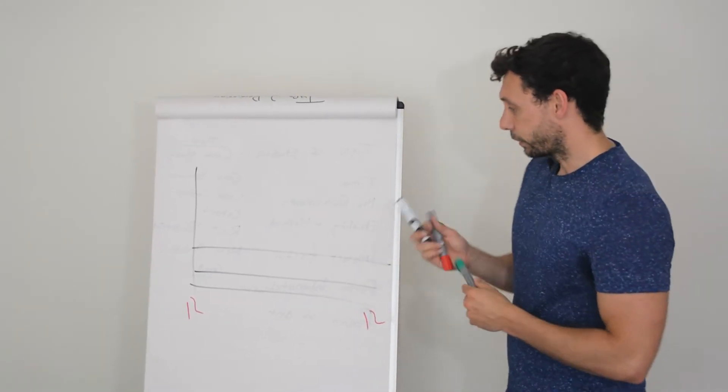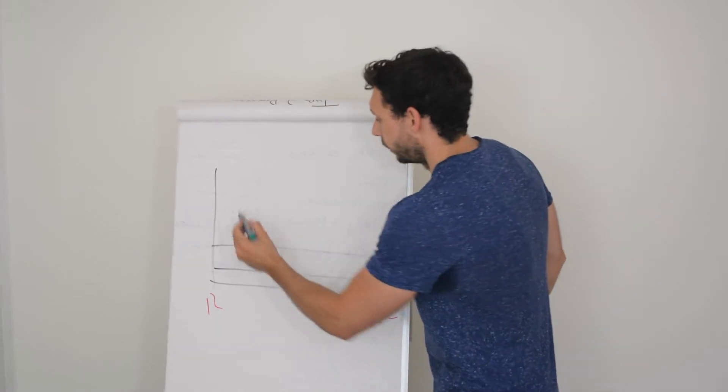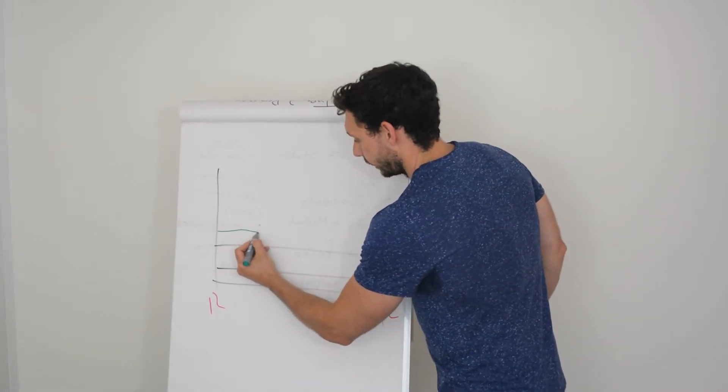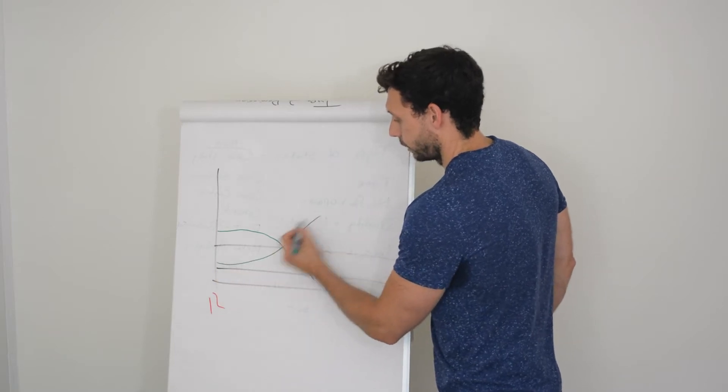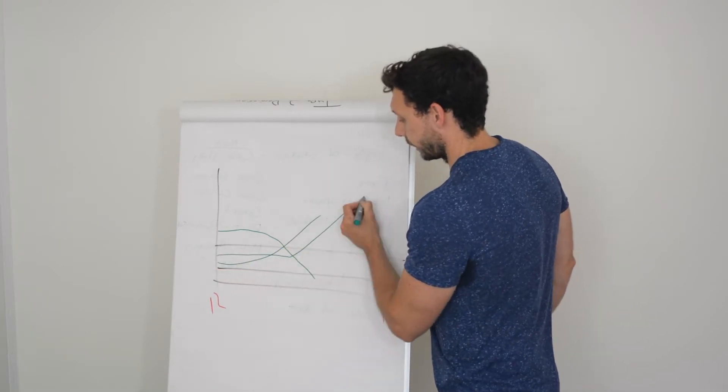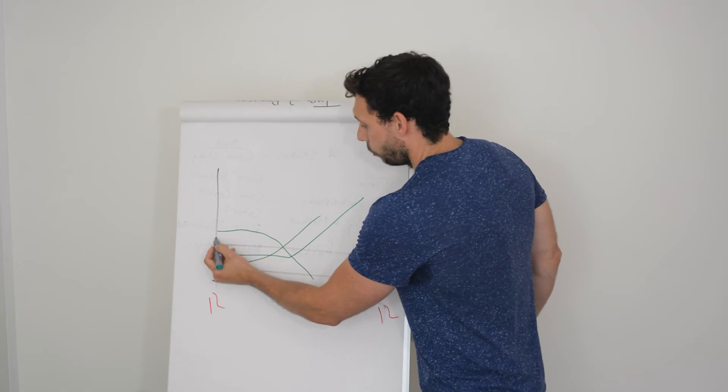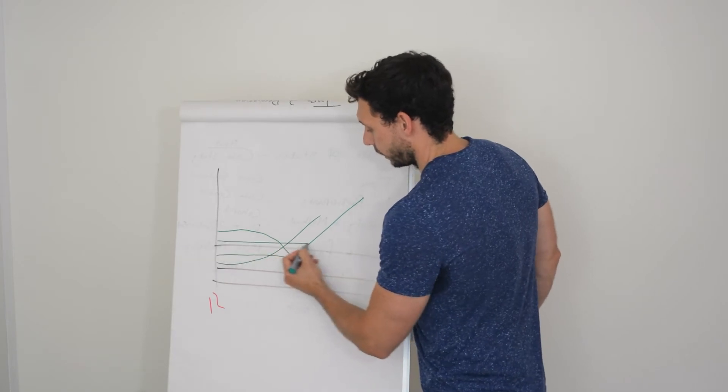So what we usually see overnight then is we obviously see this steady decline like this. We see a steady rise like this. We see it steady and then it kicks up like this. Or we see it just ticking along nicely. Okay.